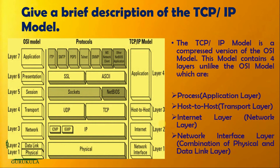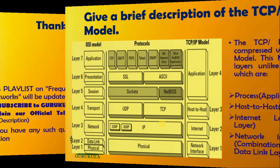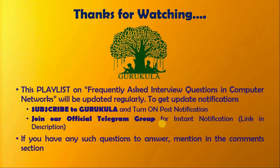This is what we call the TCP/IP model, which is more reliable as compared to the OSI model. Now you should have a clear understanding of what the TCP/IP model is. In each and every layer of the TCP/IP model, there are different protocols, as depicted in the diagram.